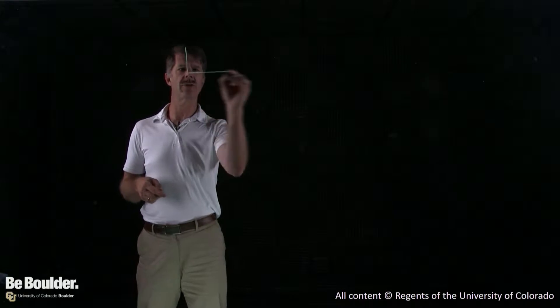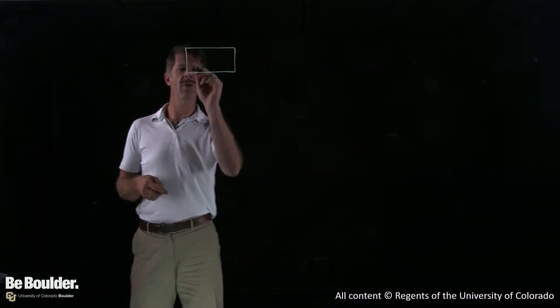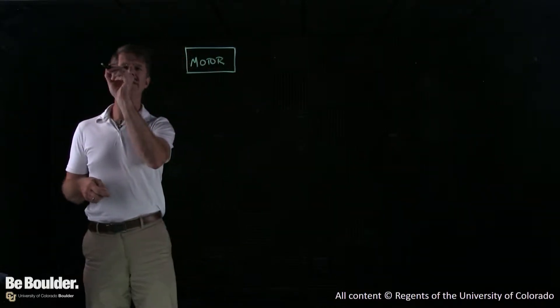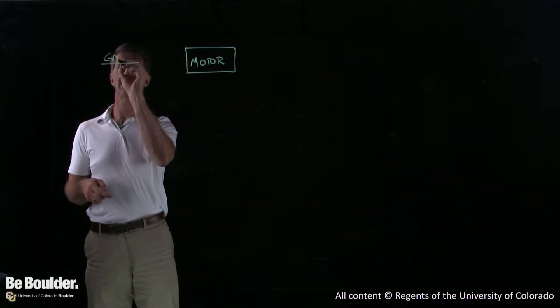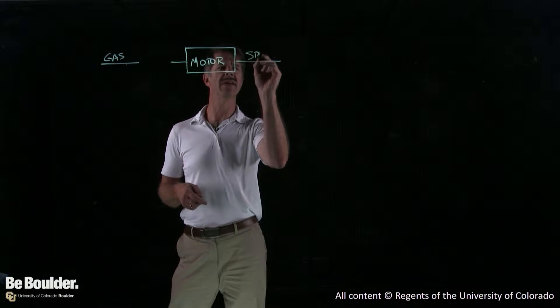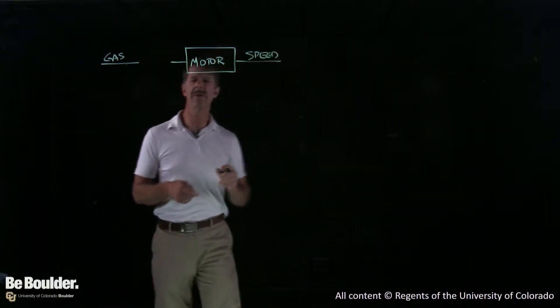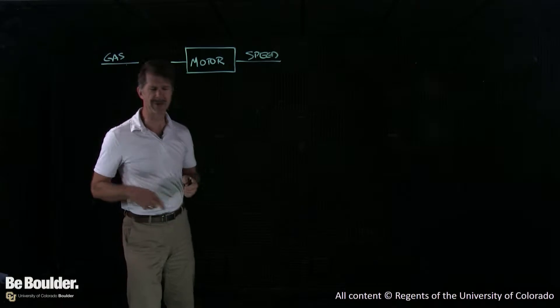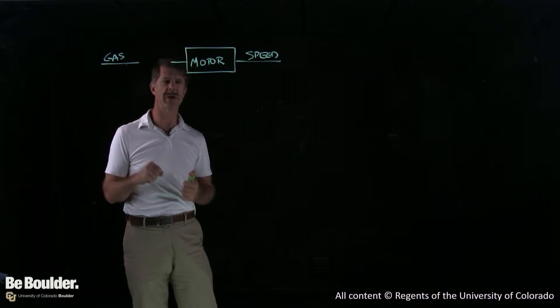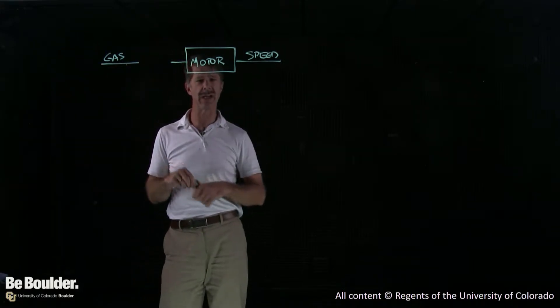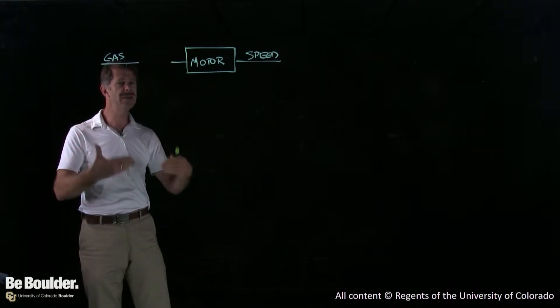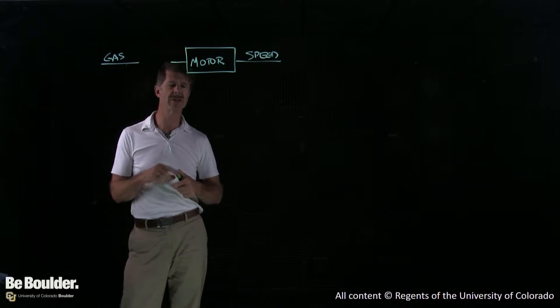A typical feedback control system would look something like this. Maybe we have a motor, and we're going to put some gas into the motor, and that motor is then going to go at a certain speed. You could be driving down the road and you put your foot on the pedal and that controls the speed. But you're on a long journey, you want to use a system to keep the motor going at a certain speed, keep the car going at a certain speed.